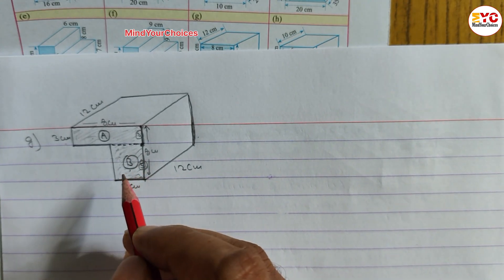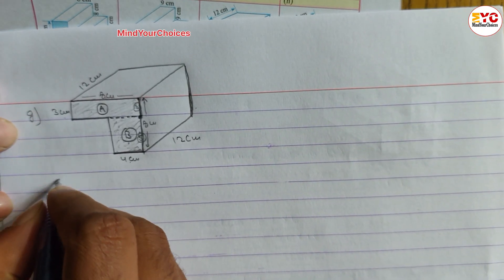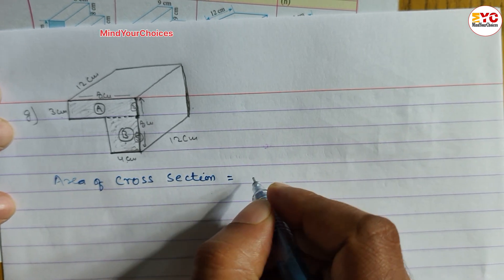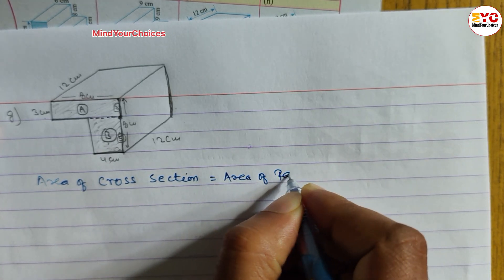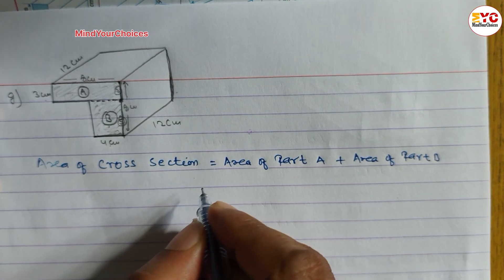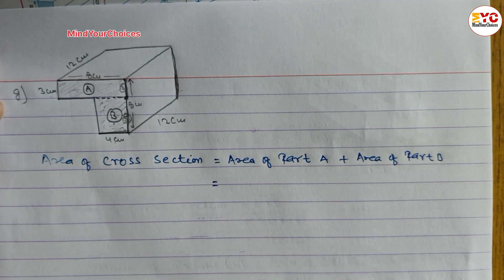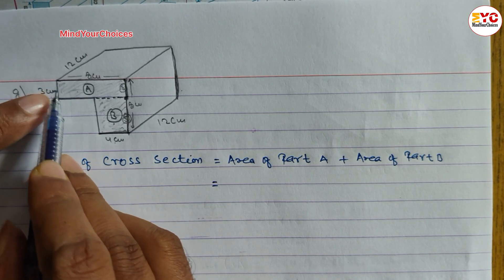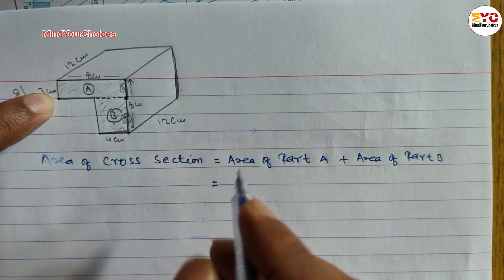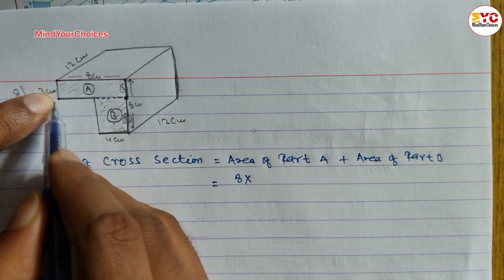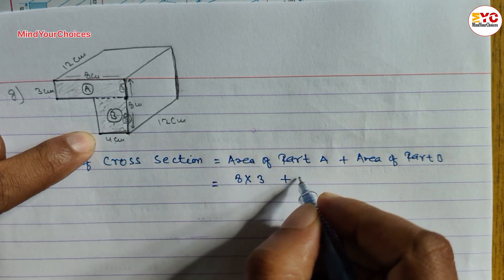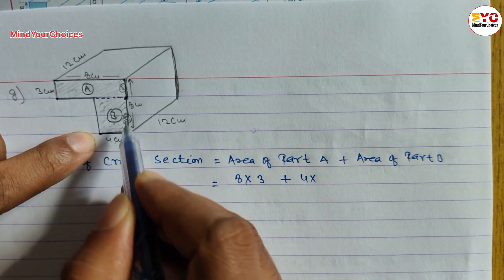Now let's find out area of cross section. We can write: area of cross section equals area of Part A plus area of Part B. So Part A: 8 into breadth — breadth is 3 — so we write 8 into 3. And Part B: 4 into breadth — breadth is 4 — so we write 4 into 4.